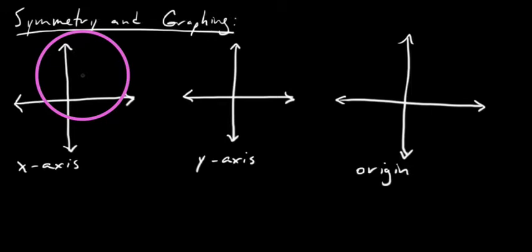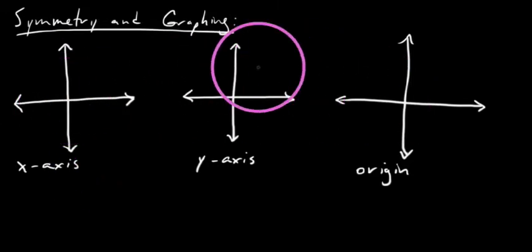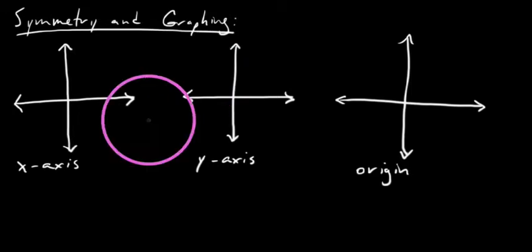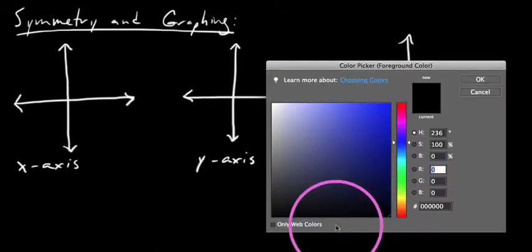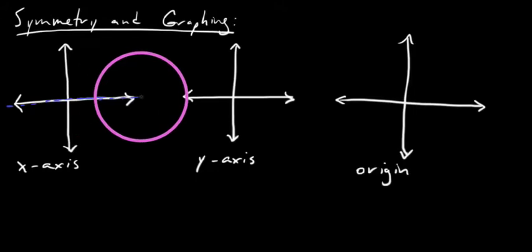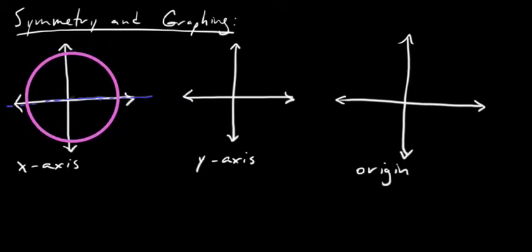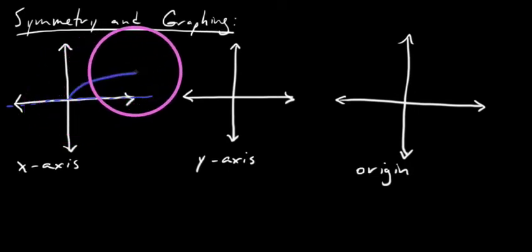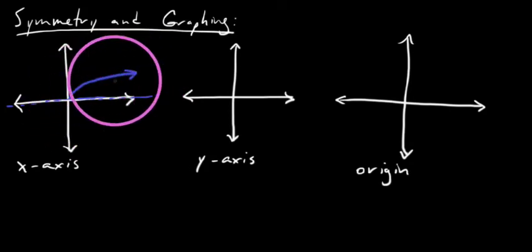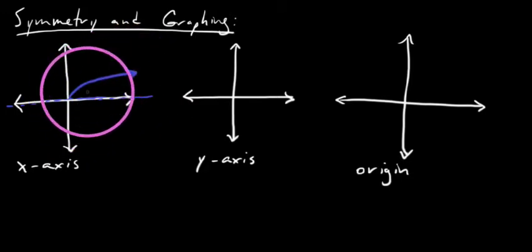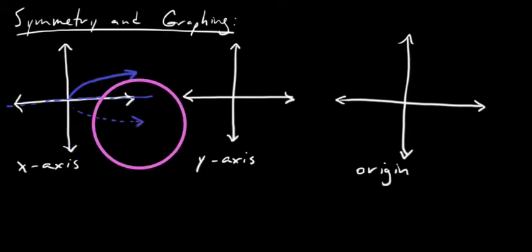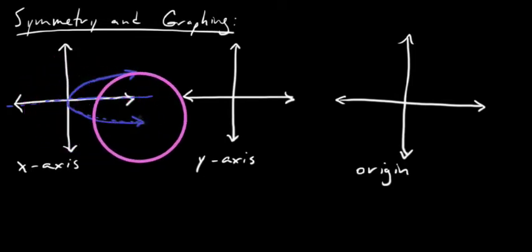I'm going to start by talking about the different types of symmetry in the XY coordinate plane — the rectangular coordinate plane, the Cartesian coordinate plane — starting with X-axis symmetry. When we talk about symmetry, we're really bringing up the fact that something can be like a mirror image. If we knew a graph was going to exhibit X-axis symmetry and we knew half of the graph, we'd be able to sketch the other half without having to do a whole lot of work.